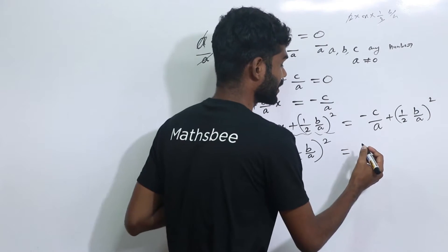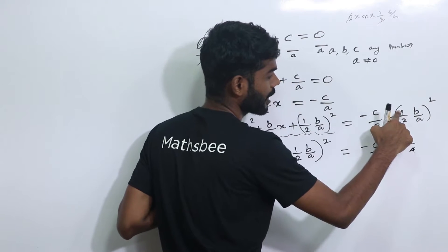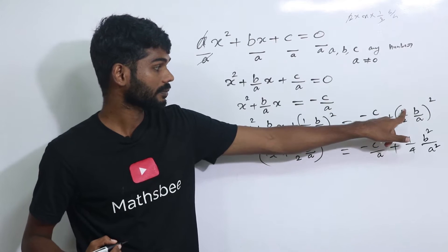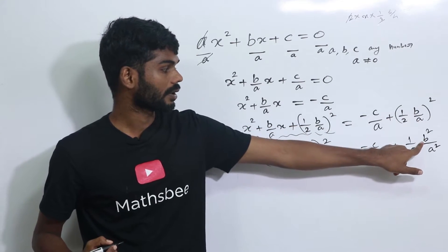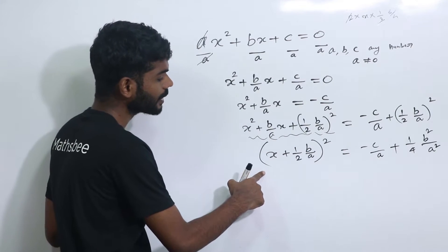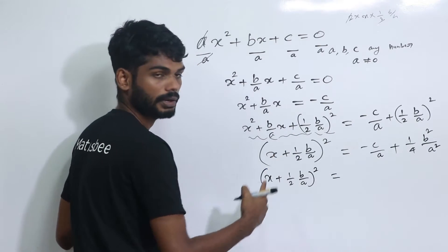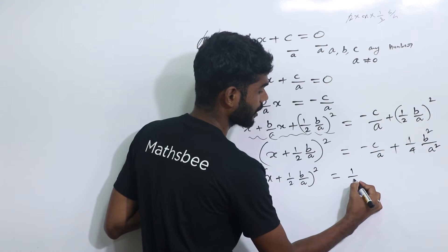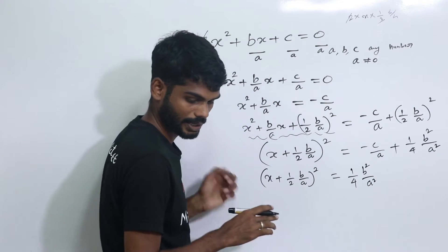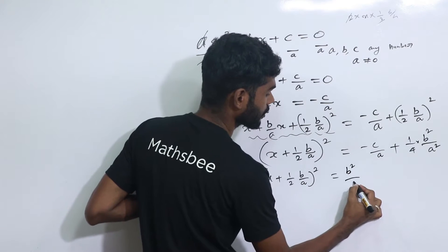We simplify the right hand side. We get b squared by 4a squared minus c by a. Written in standard form, that is b squared by 4a squared minus c by a. So x plus half into b by a, all squared, equals b squared by 4a squared minus c by a.